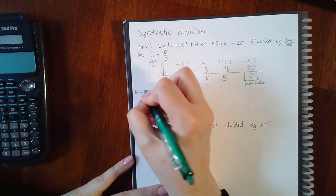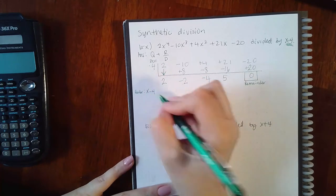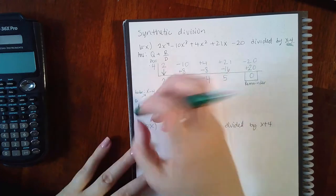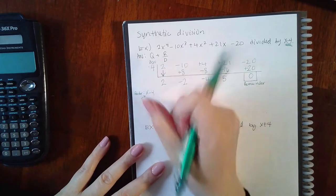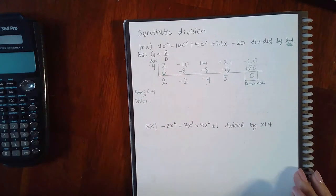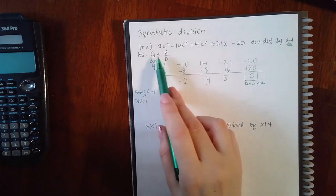Is your quotient—no, if 4 is my zero, x minus 4 is my factor. That is not my quotient, I said the wrong word, my divisor. That is what I was dividing by.